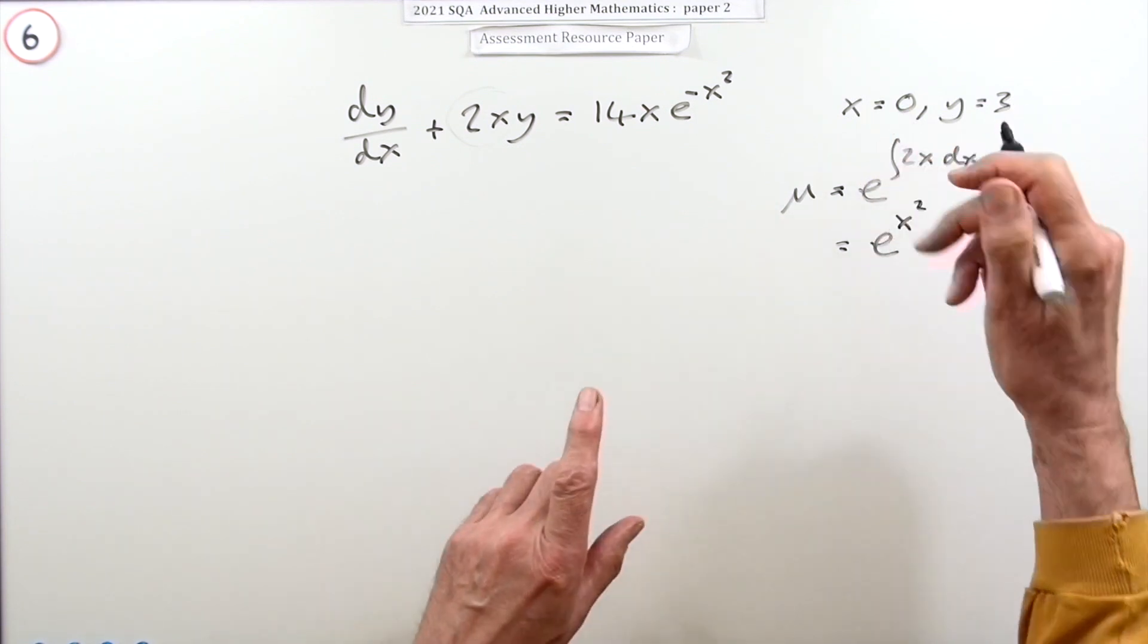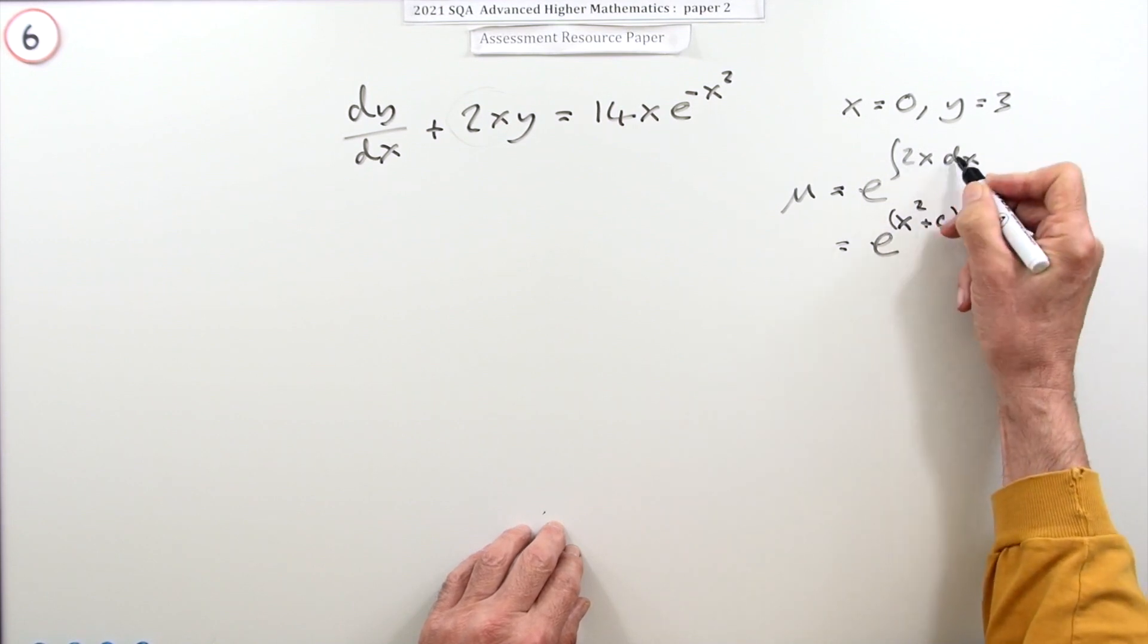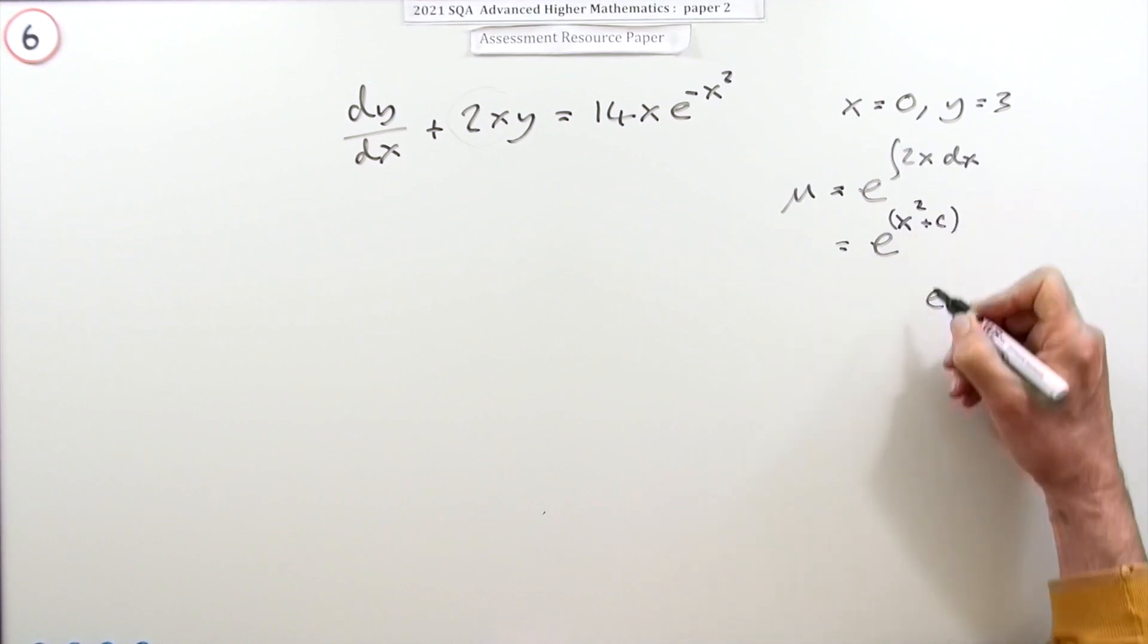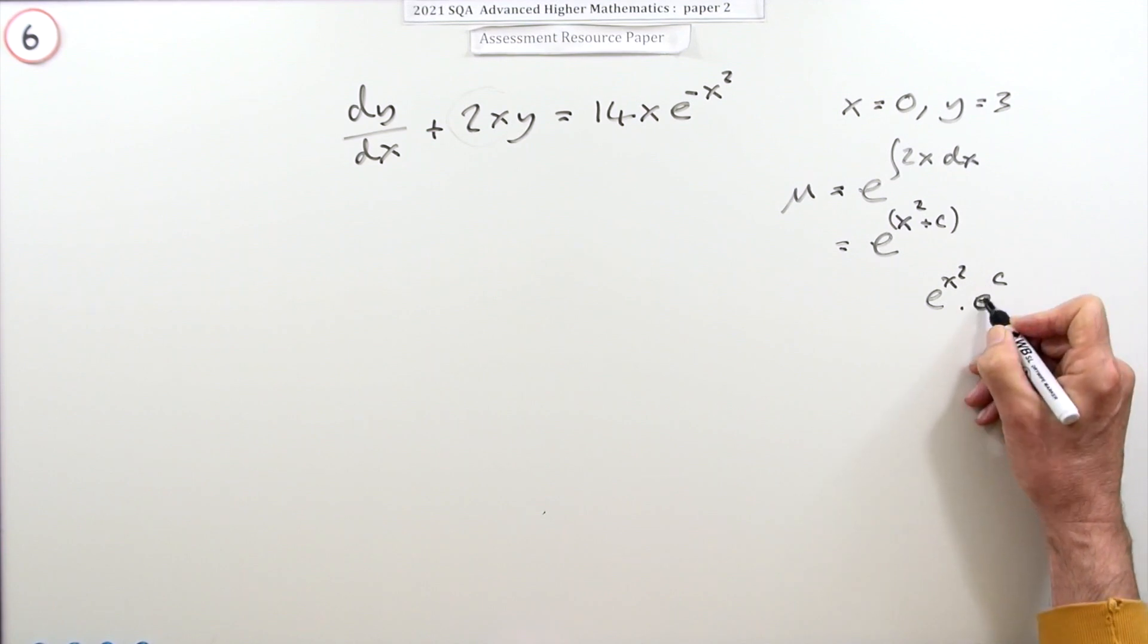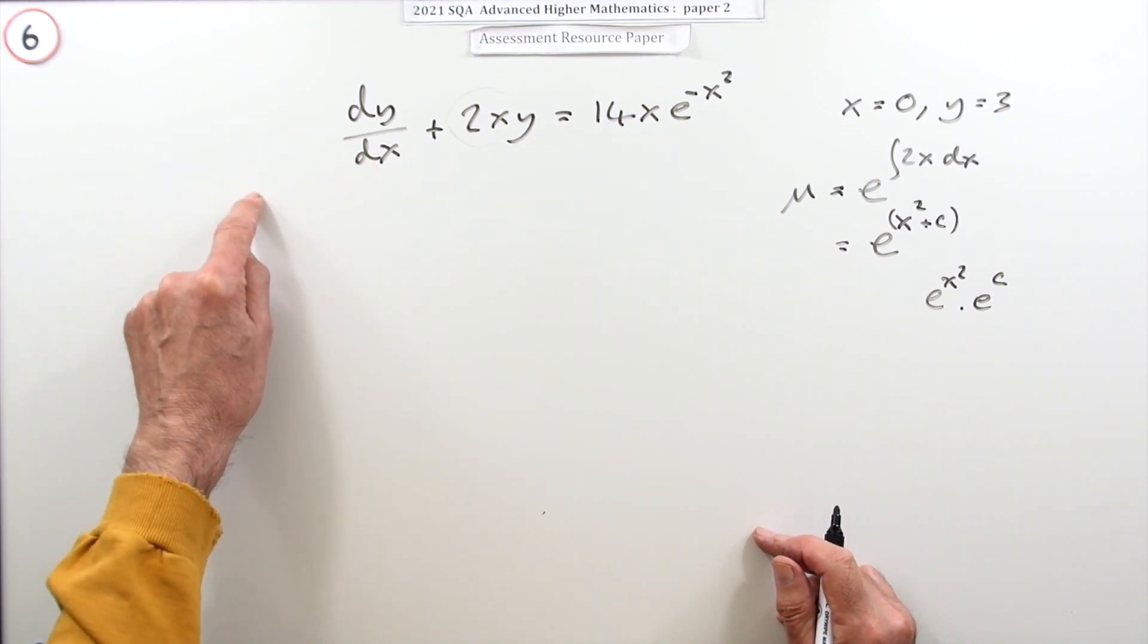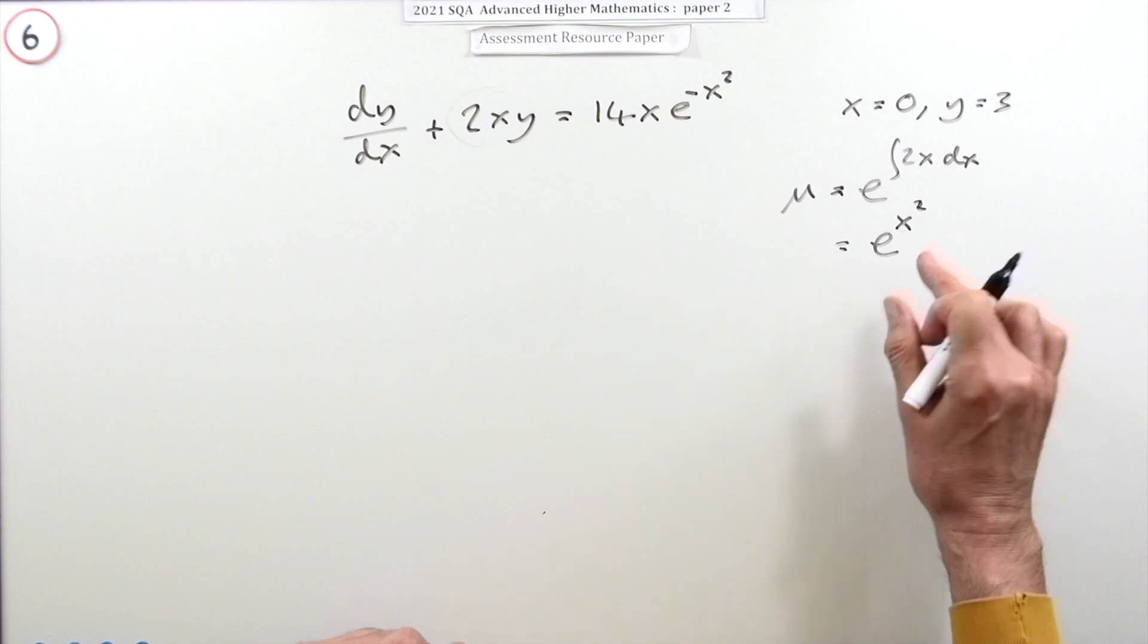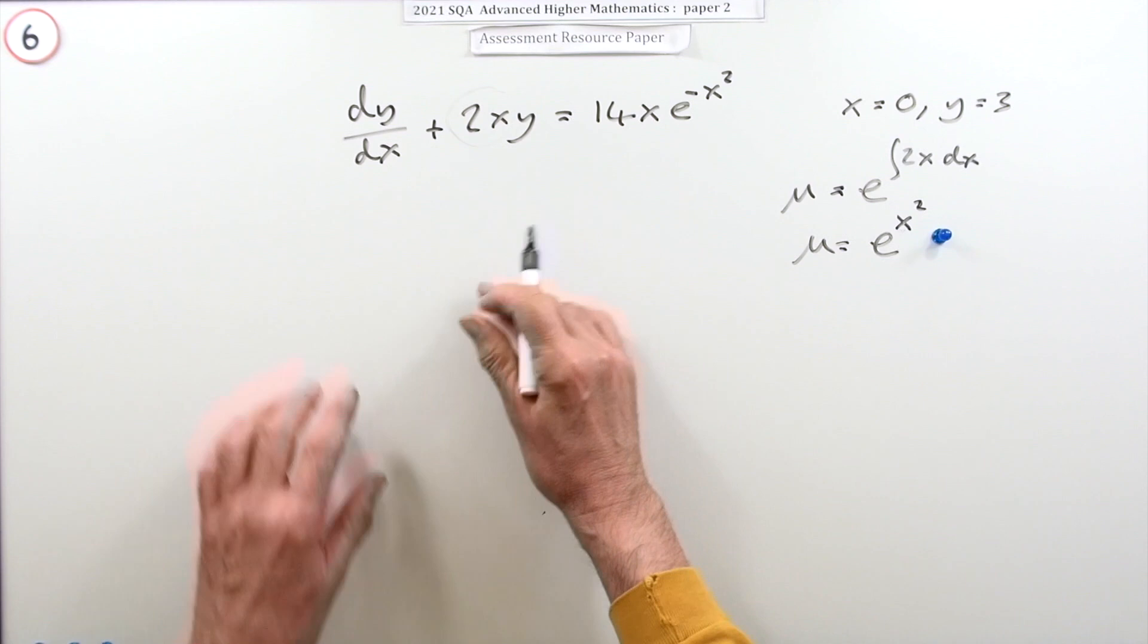Now yes, you could say that's e to the x squared plus c, and if you do that by laws of indices that means e to the x squared times e to the c. So that's some constant that will multiply everything and thereby just get divided out straight away, so there's no need to put down that constant. That's why you just put e to the x squared. So that's the first mark, the integrating factor.